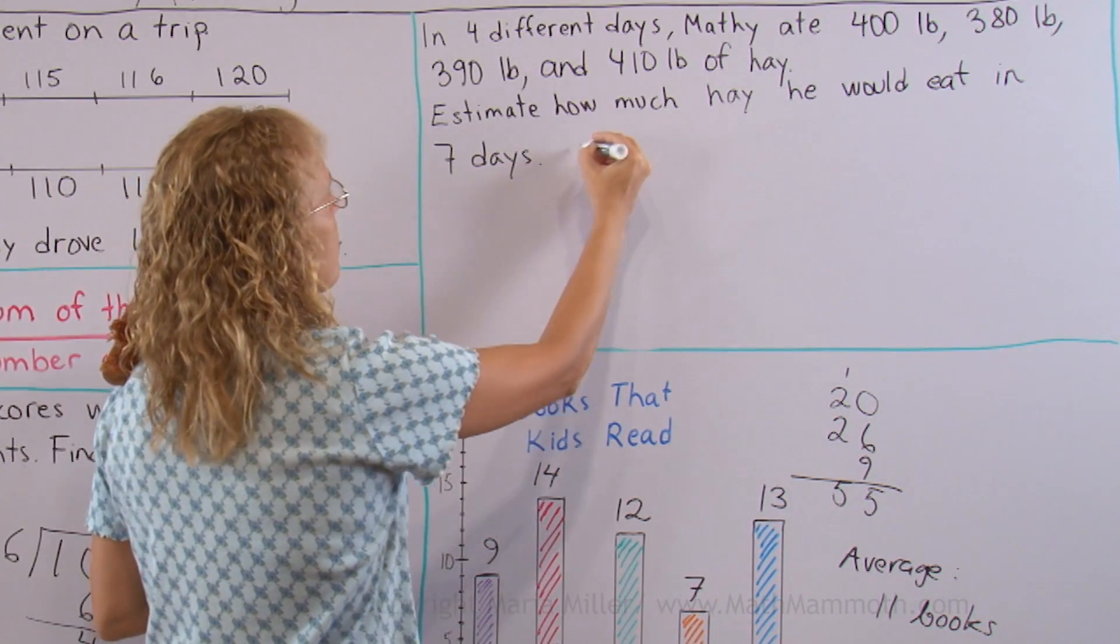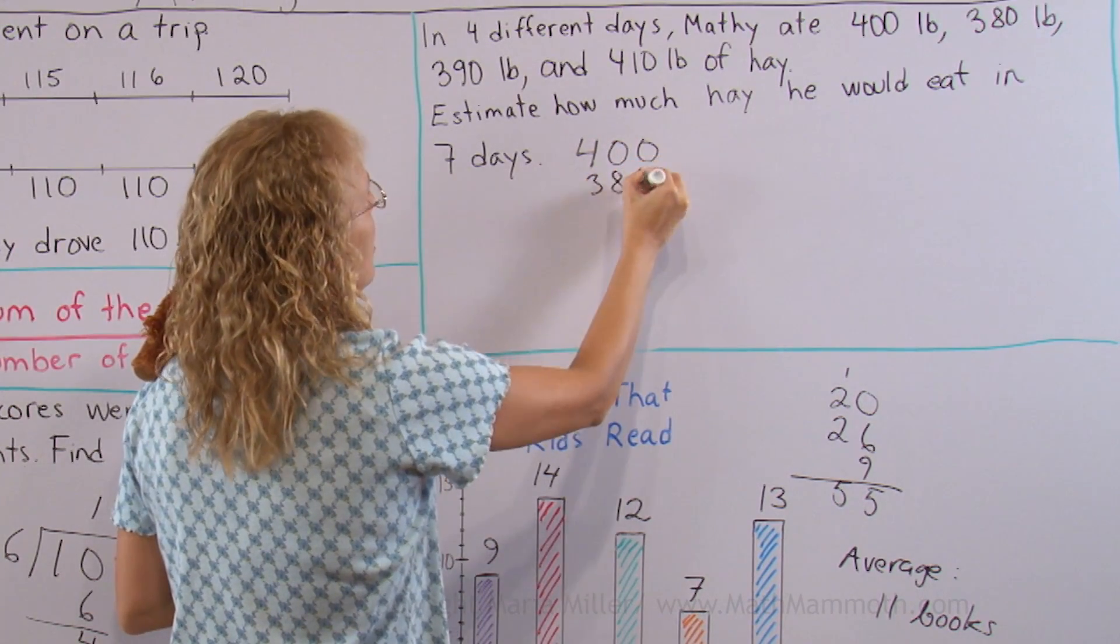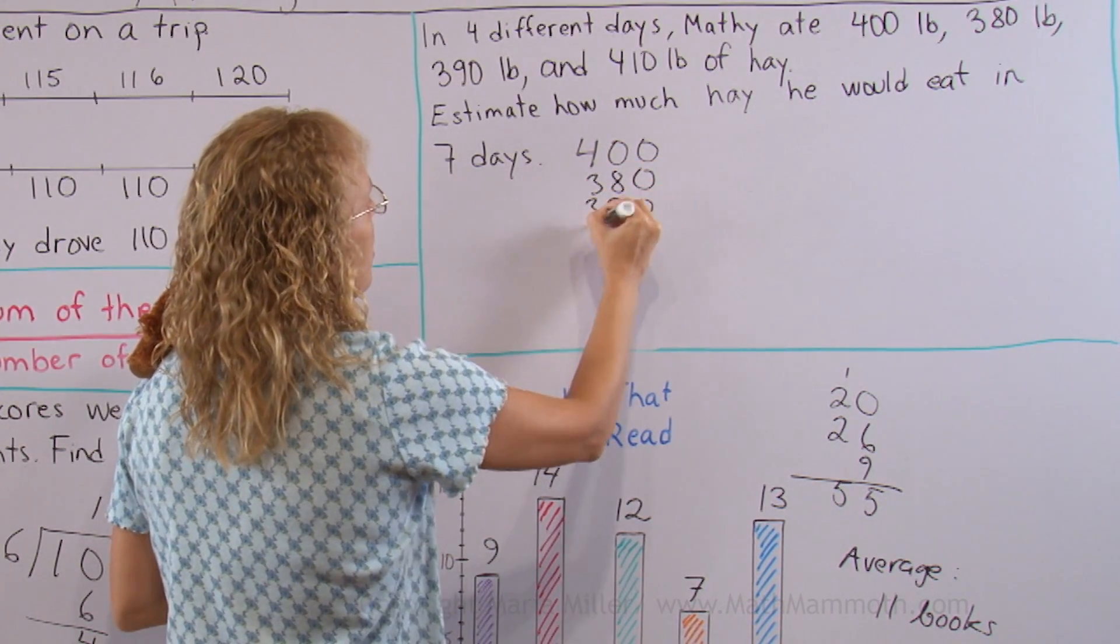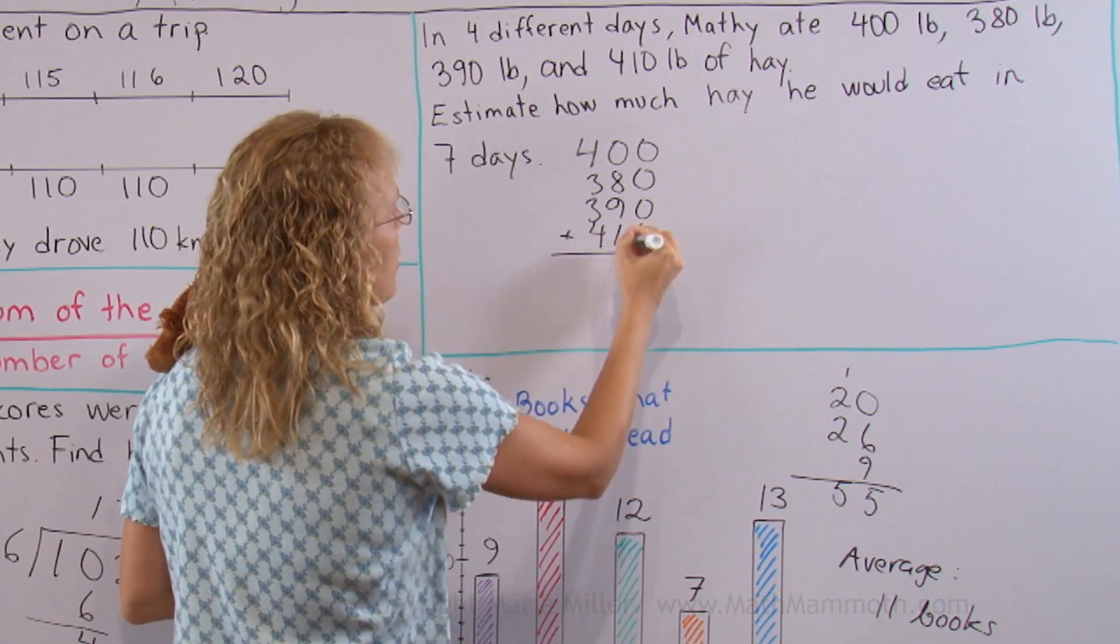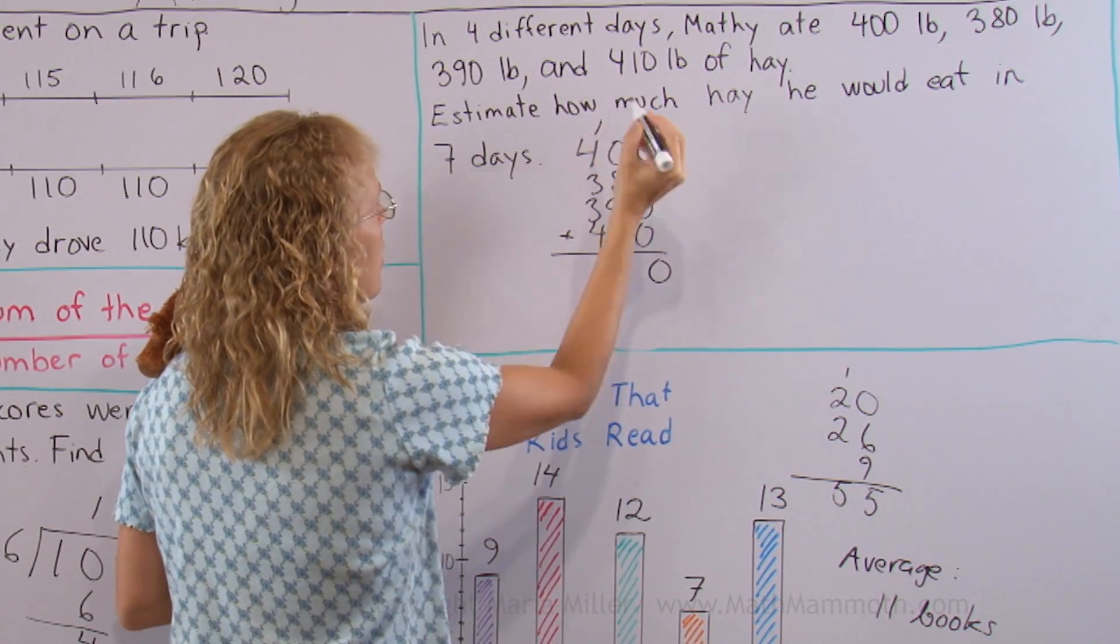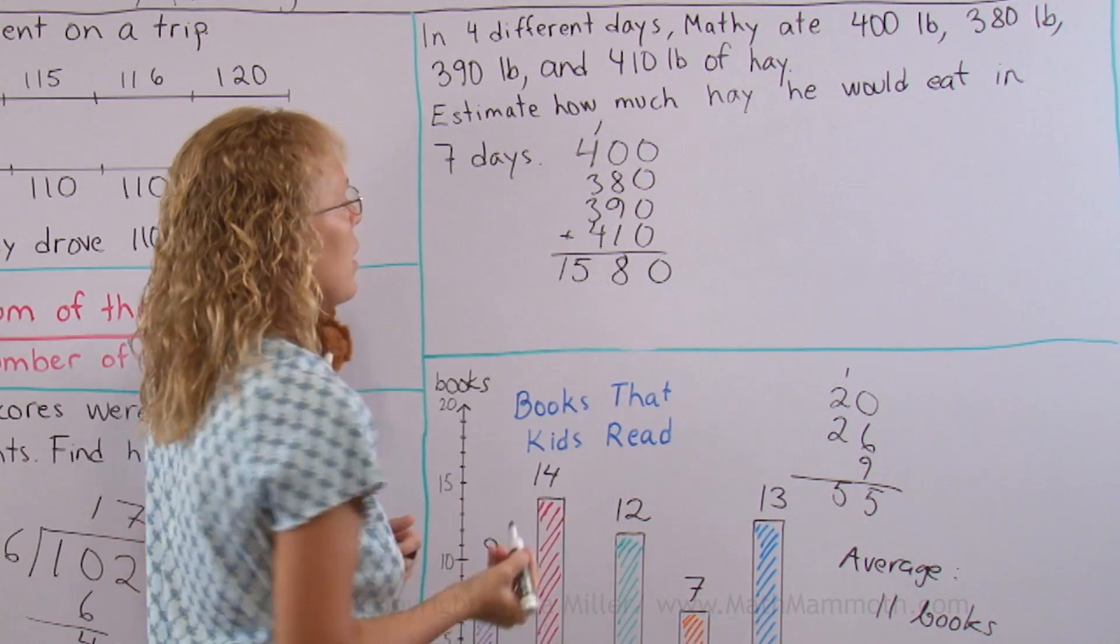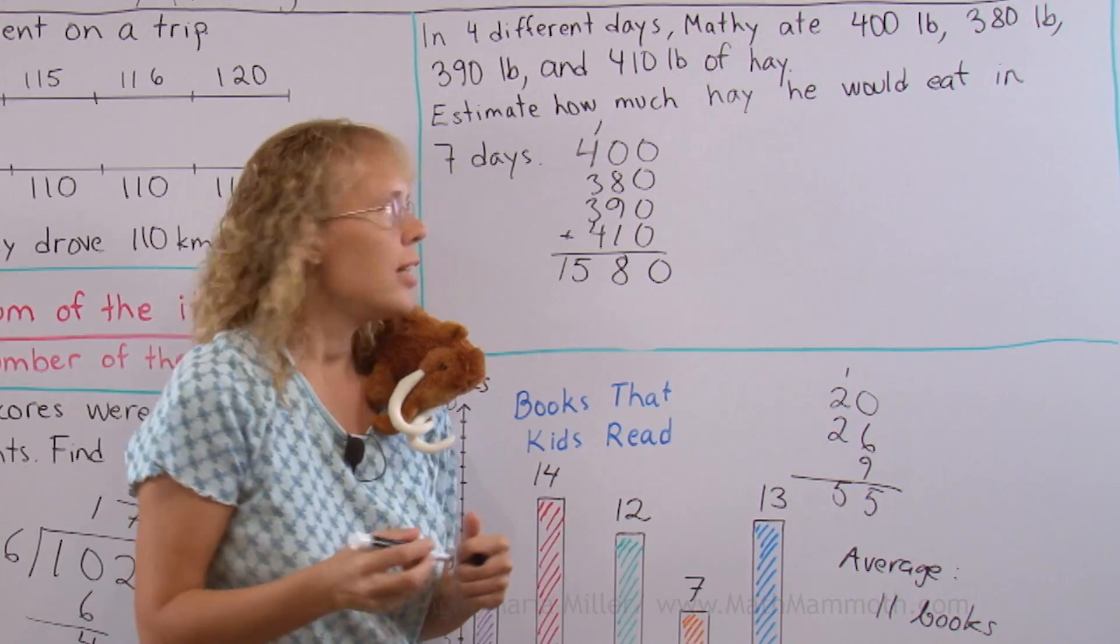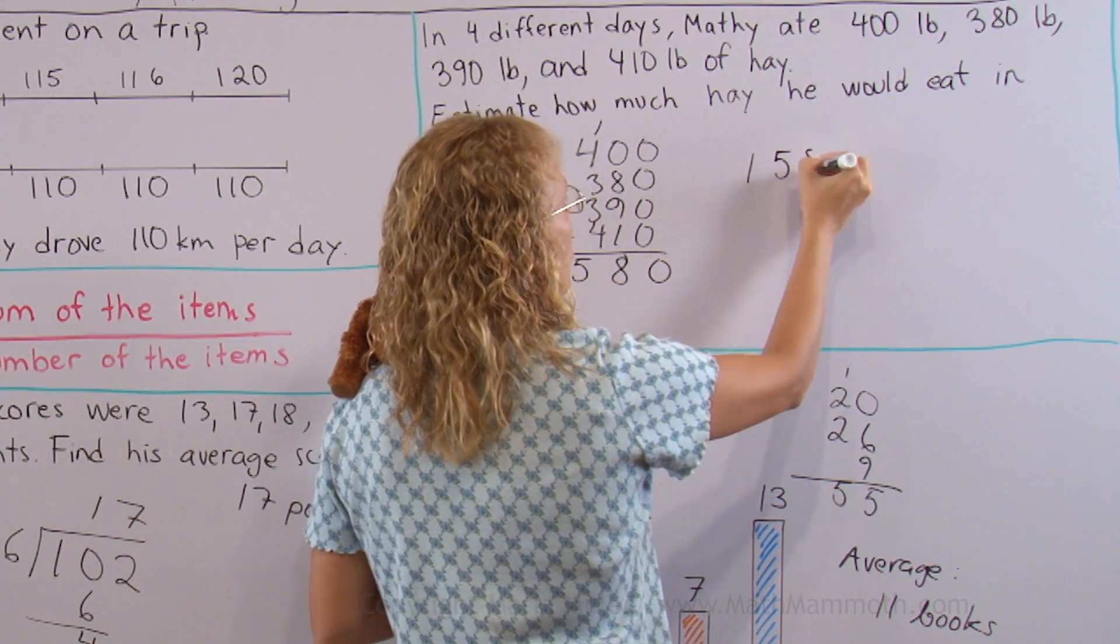So we add those. 400 and 390 and 410. Okay, that's 10, 18. Then we have 5, 8 plus 7, 15. The total is 1580 pounds for 4 days. And then we need to divide that by 4 to get the average.